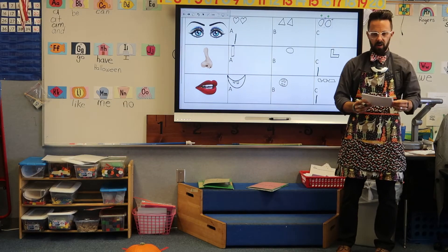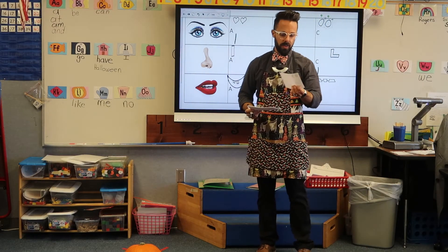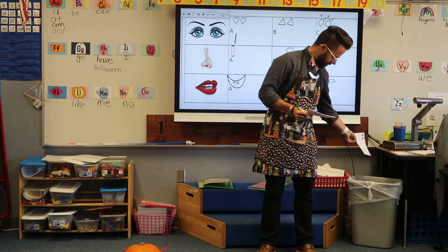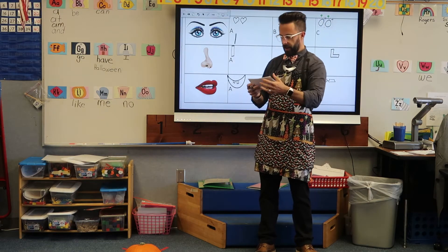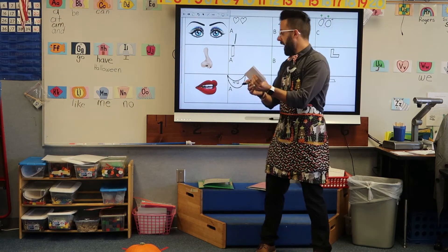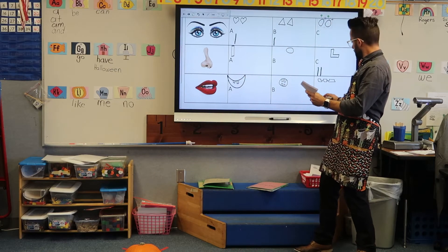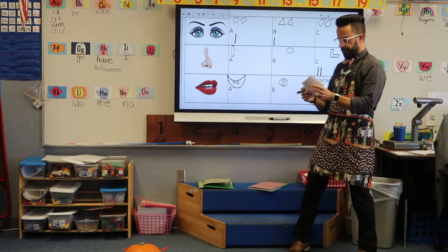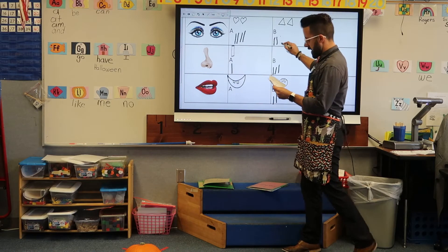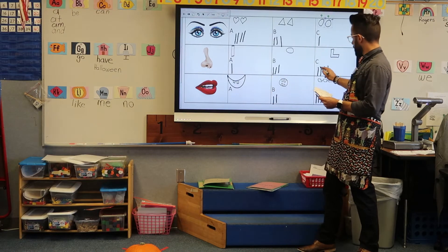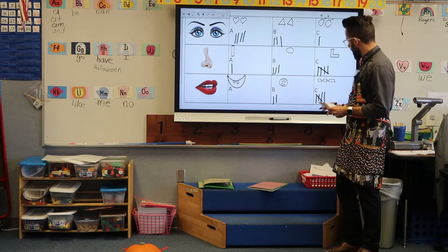Next one. Oh, bummer — someone marked all the letters. Oh well. Next ballot: B, C, C. We've got B. One, two, three, four, five. Close the gate.